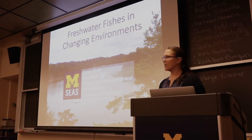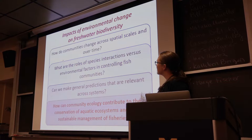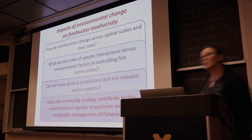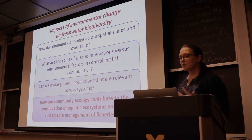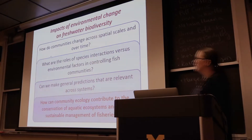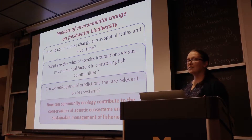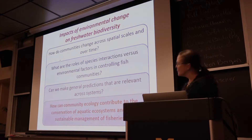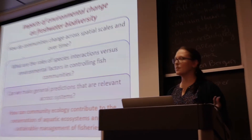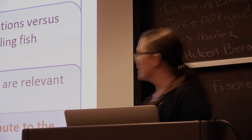I'm a freshwater ecologist and I look at the impacts of changing environments on fish communities. I generally frame my work using three broad questions. The first is how do communities change both across spatial scales and over time? The second is what are the relative roles of species interactions and environmental factors in controlling fish communities? Thirdly, can we make general predictions across systems — whether that's tropical or temperate systems, or aquatic versus terrestrial systems? And finally, I use these questions to approach the overarching question of how community ecology can contribute to the conservation of aquatic ecosystems, which are perhaps more threatened than terrestrial ecosystems, and the sustainable management of fisheries.